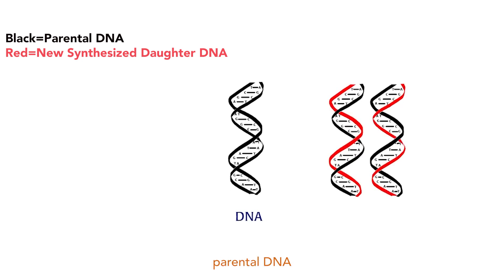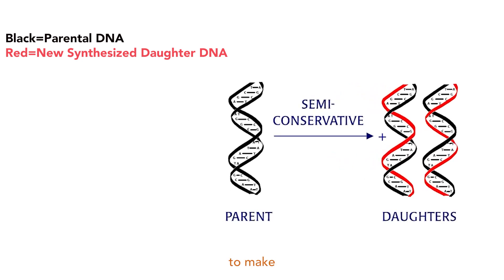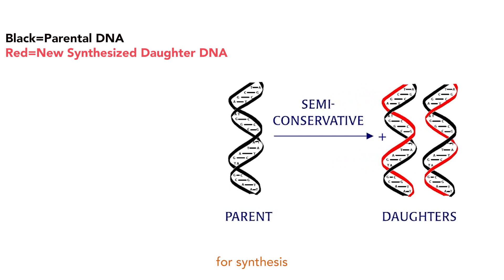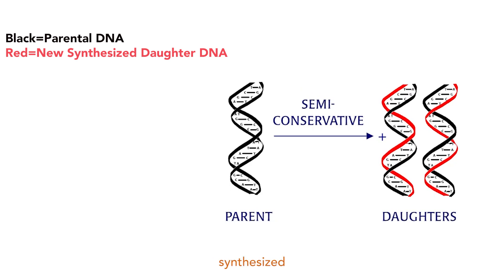Here, black parental DNA strands are templates to make new red DNA strands. In the semi-conservative replication model, each parental strand acts as a template for synthesis of a new strand. In the two daughter DNA molecules, each will have one parental black strand and one newly synthesized red strand of DNA.